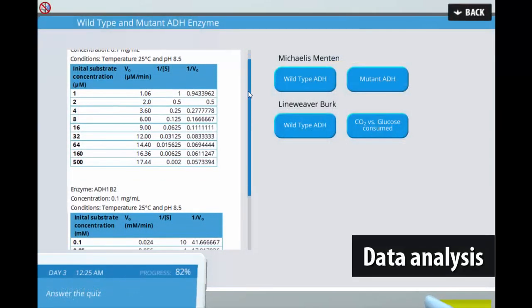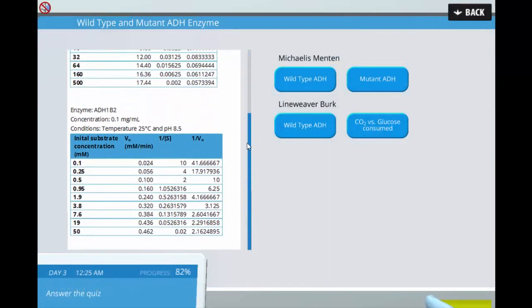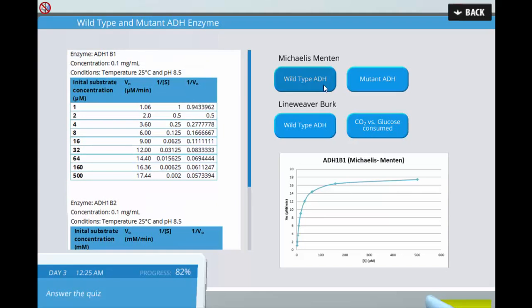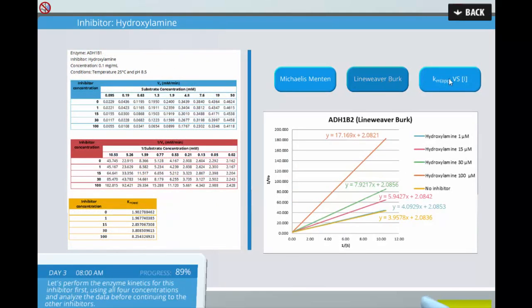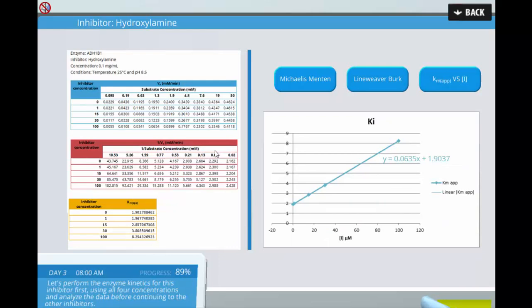At the end of the experiment results are presented as an Excel spreadsheet. Students must analyze their outcome data and plot their own Michaelis-Menten graph to find the KM and Vmax for each enzyme.